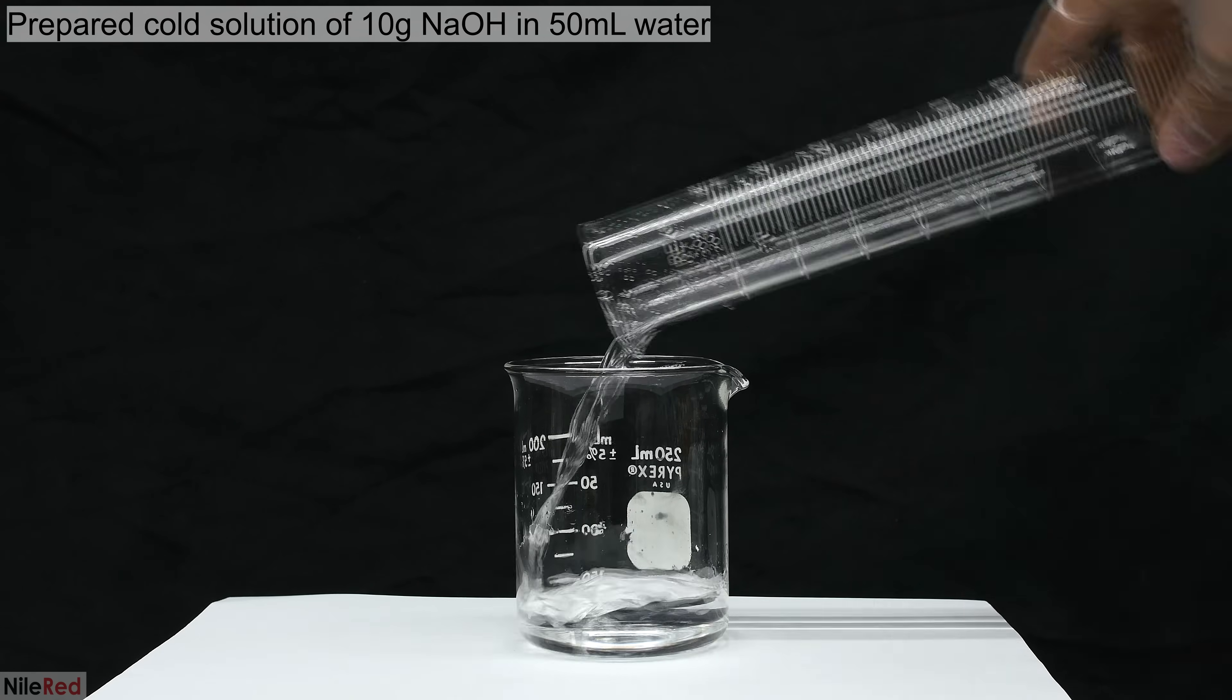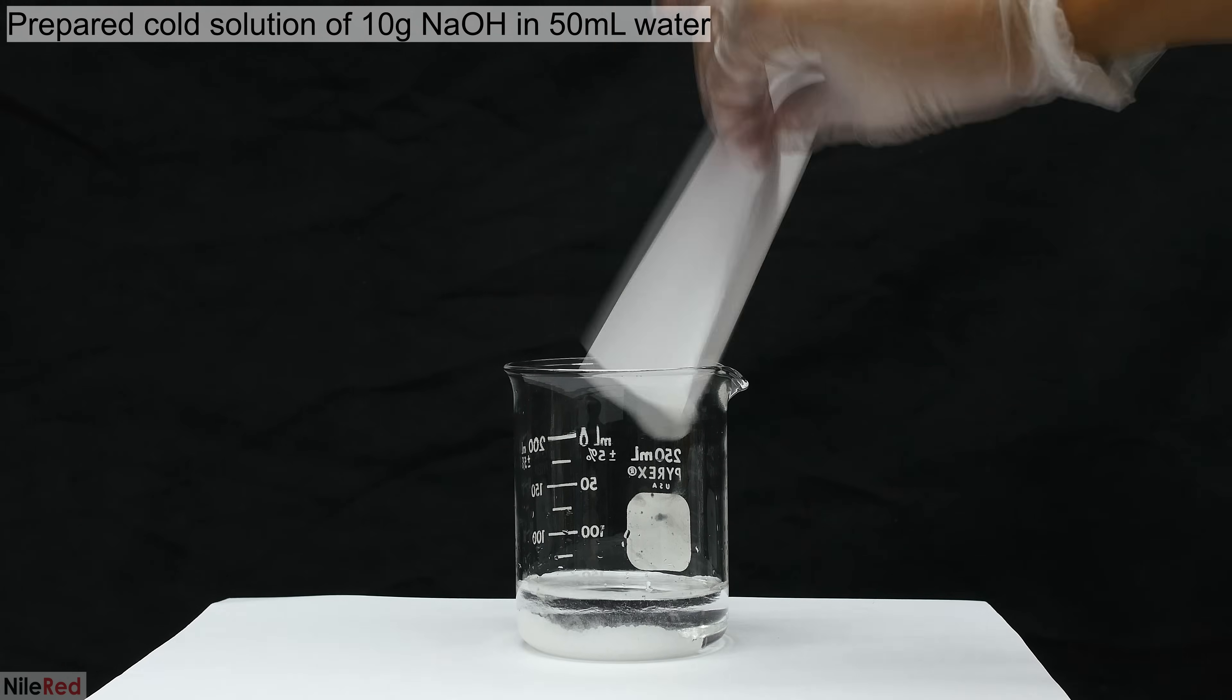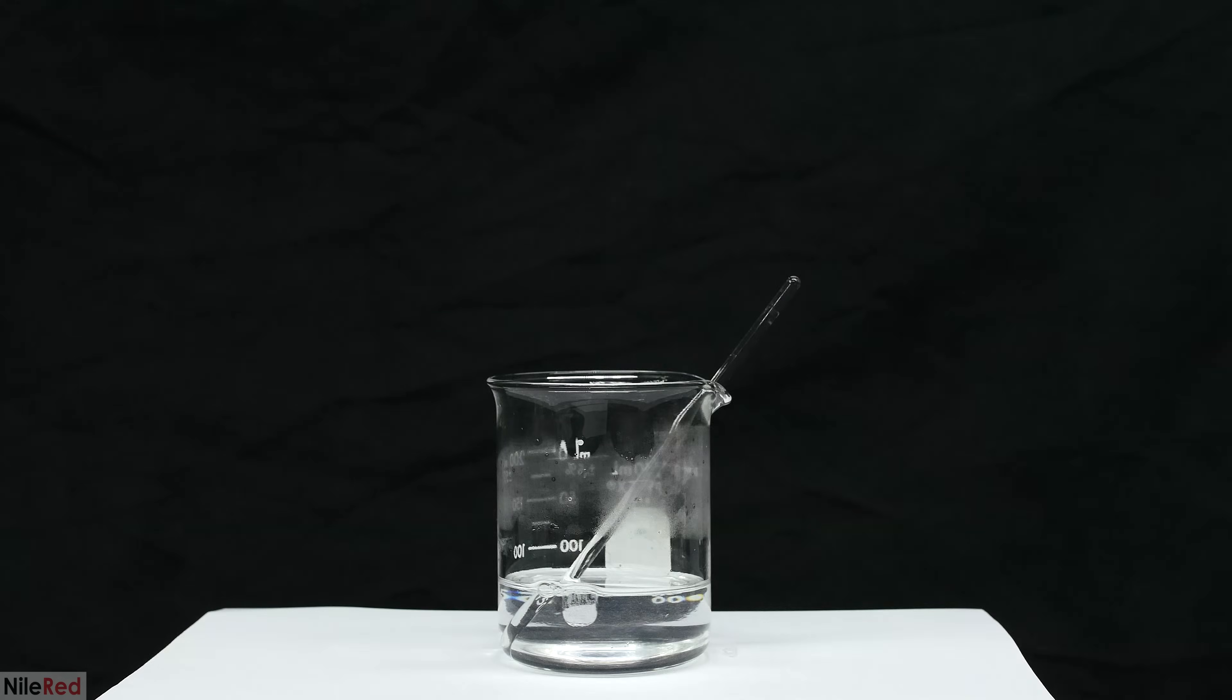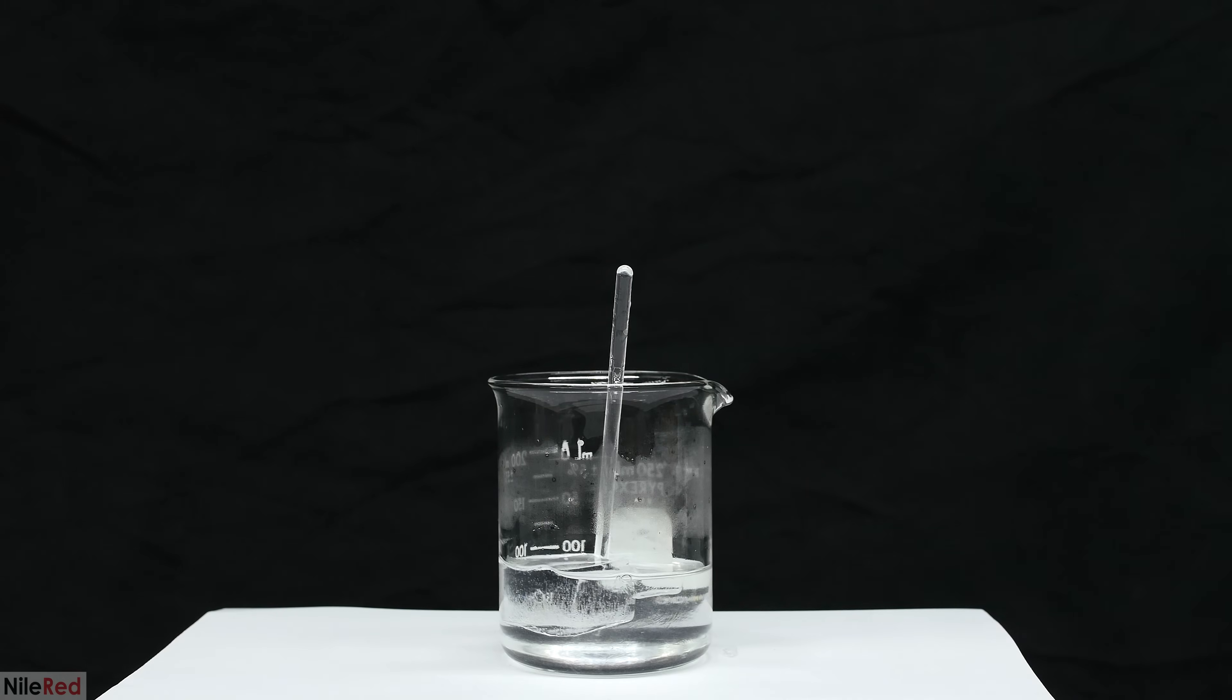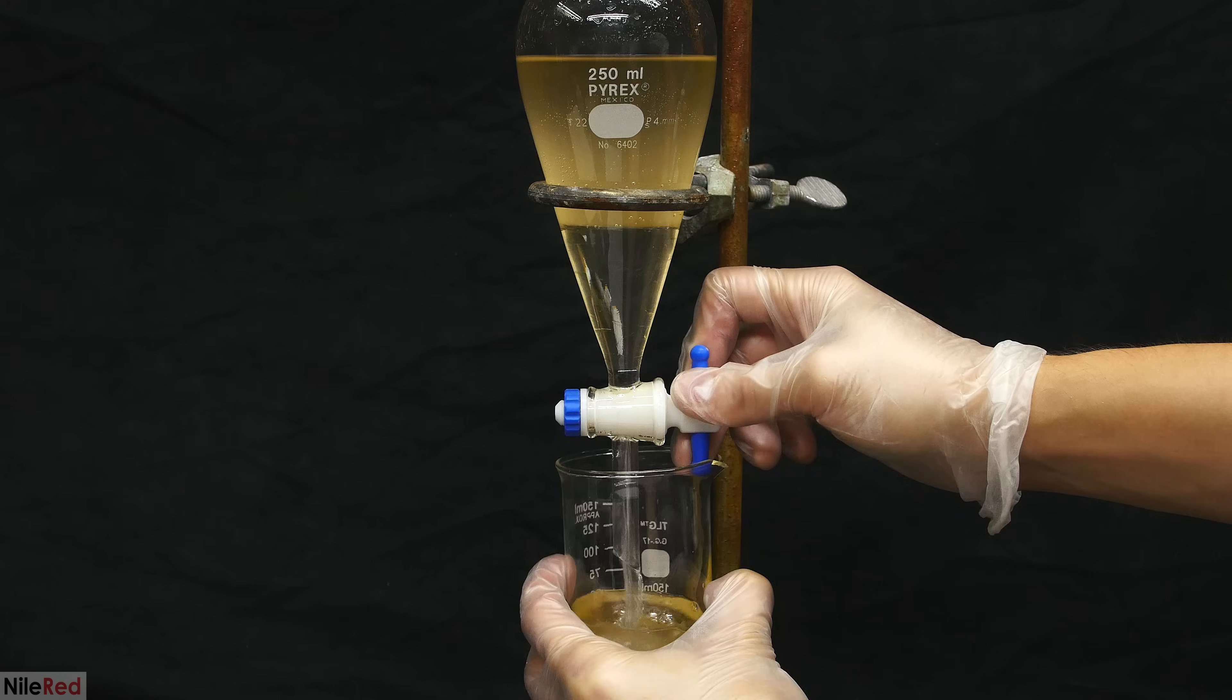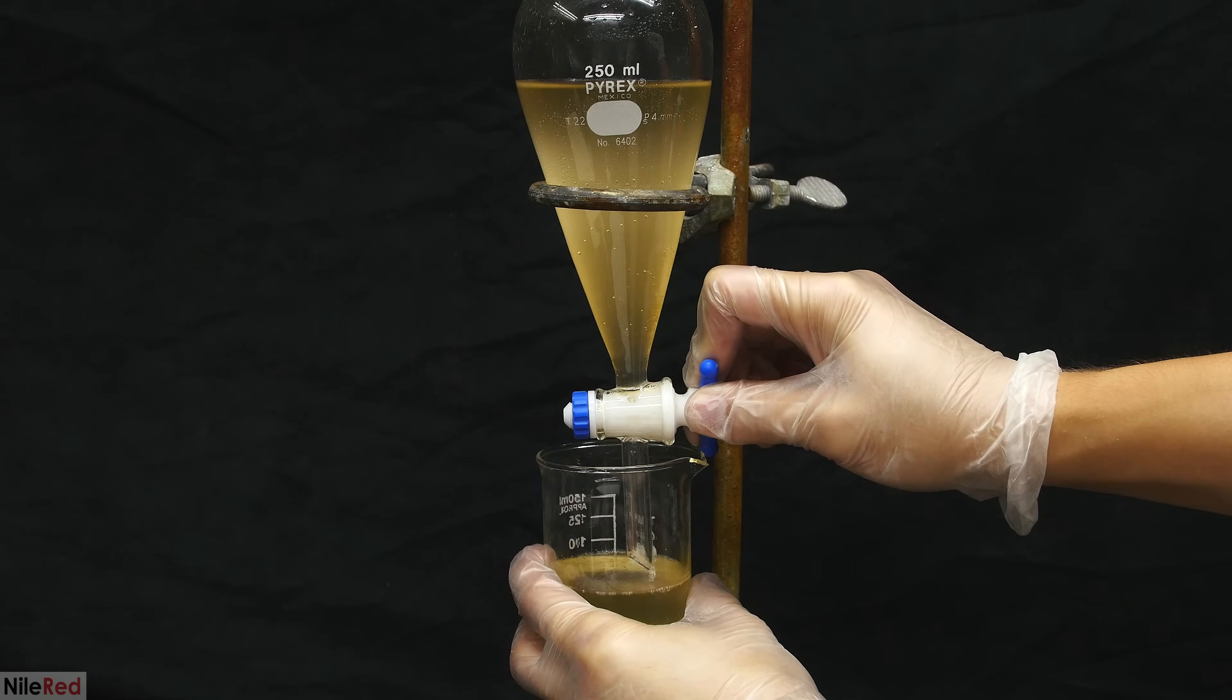In the meantime, while we wait for the layers to separate, I prepared a cold solution of 10 grams of sodium hydroxide in 50 milliliters of water. This preparation was pretty easy, where in the first step I dissolved the sodium hydroxide into the water, and once everything was dissolved, I dropped in a few ice cubes. Now we come back to the separatory funnel, and the layers have separated, so I carefully removed the lower DCM layer. The DCM washing that I drained here was combined with the anisole that I collected earlier.